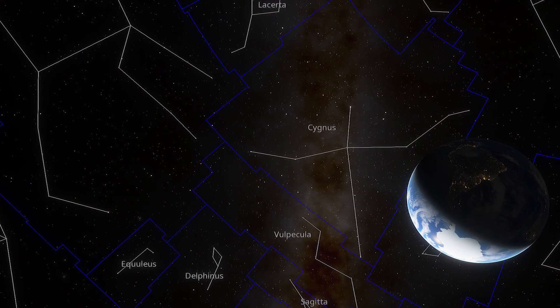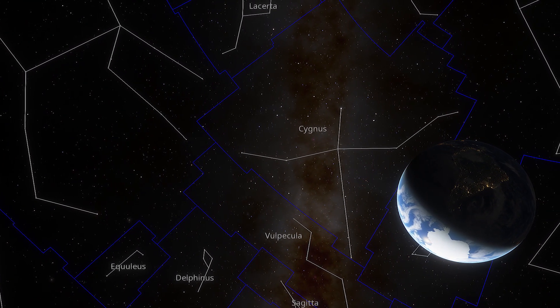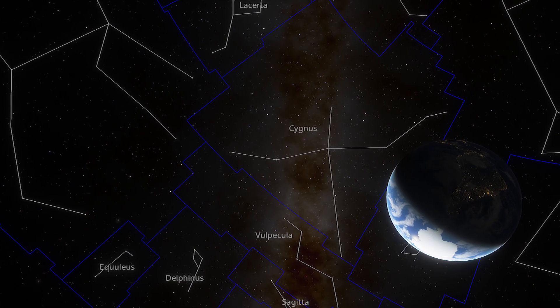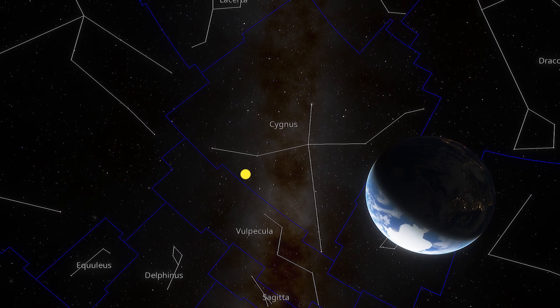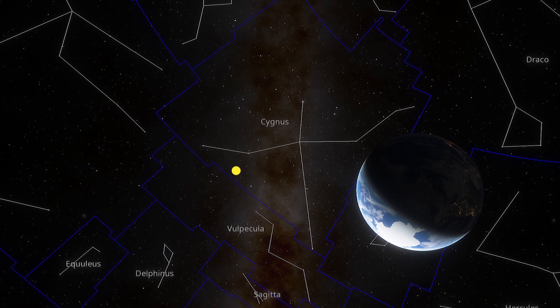The Veil Nebula crosses the meridian around 11 p.m. in early September. It's located just below the left wing of Cygnus the Swan, three degrees south of Epsilon Cygni.